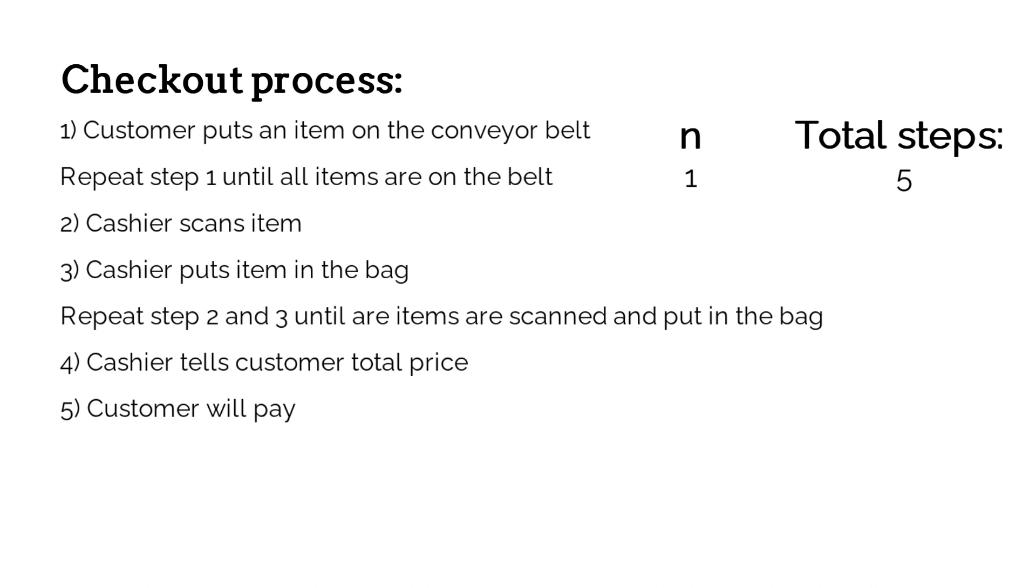Now imagine that the customer has 100 items instead of one. The customer would put 100 items on the conveyor belt, so the first step will be repeated 100 times. The cashier will scan the items and then put it in a bag. These two steps must be repeated 100 times bringing the total number of steps to 300. Then the cashier will tell the customer what the total price would be and that's 301 steps and eventually the customer will pay. So now we have a total number of steps of 302.